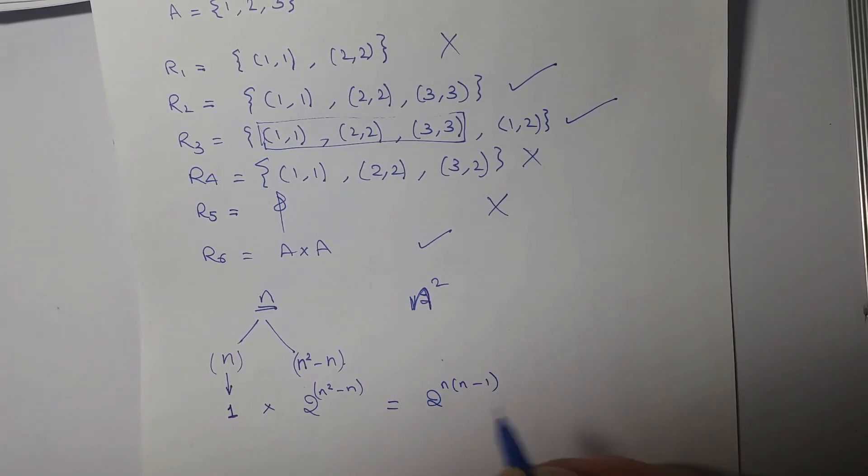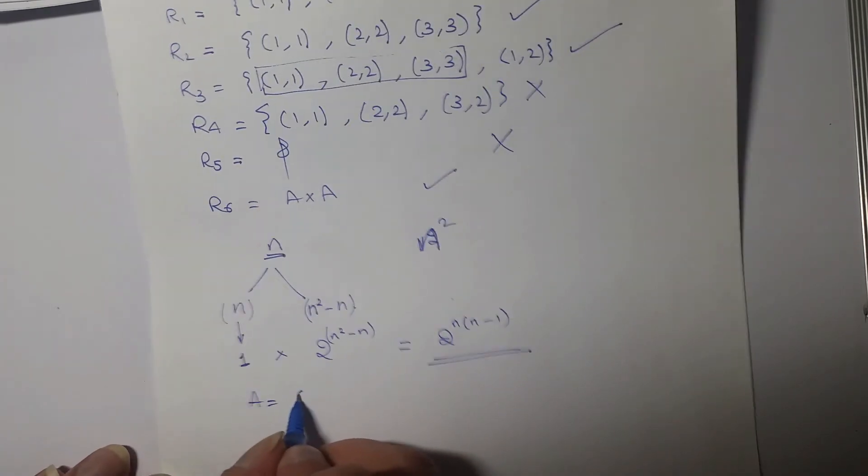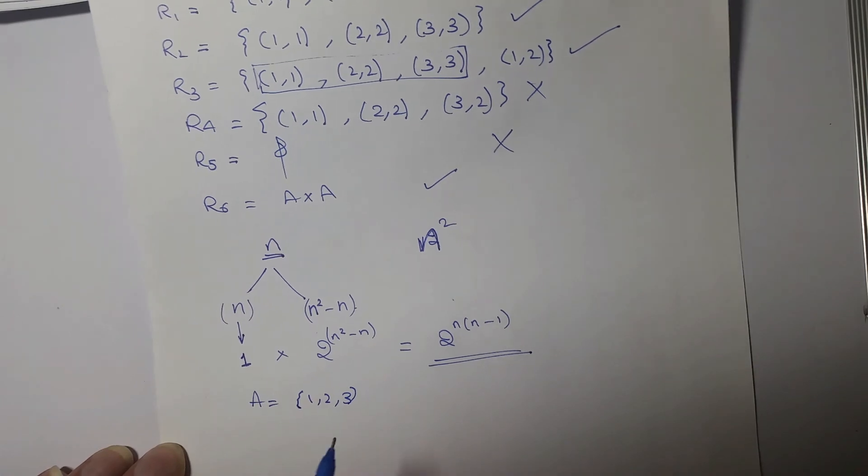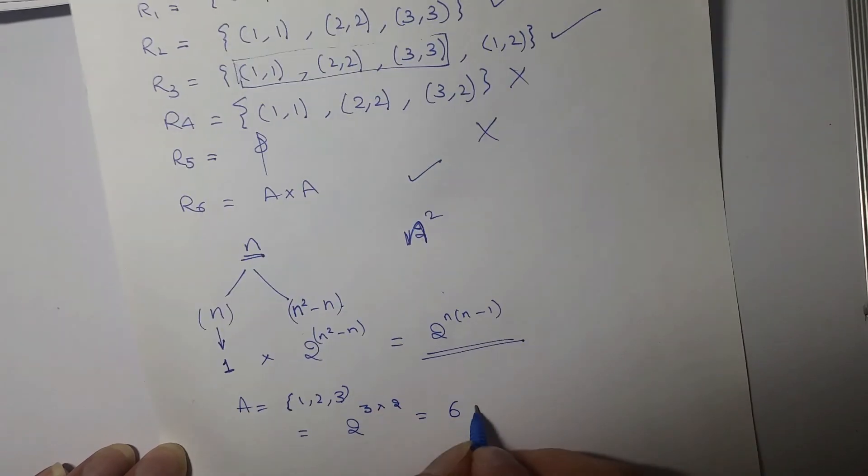This can be written as 2 to the power n into (n minus 1). This is the number of reflexive relations. So if we were to say A is {1, 2, 3}, the number of reflexive relations is 2 to the power 3 into 2, or 64 reflexive relations on a set of 3 elements.